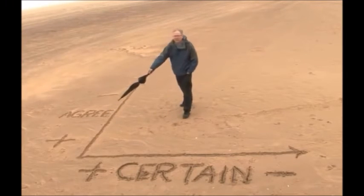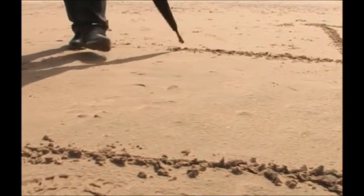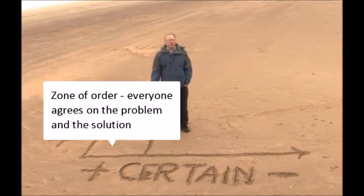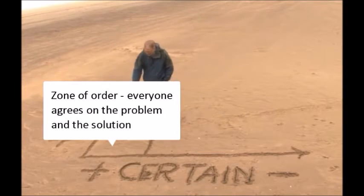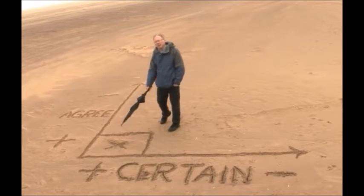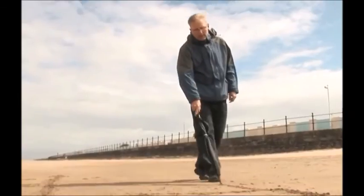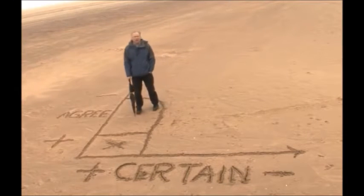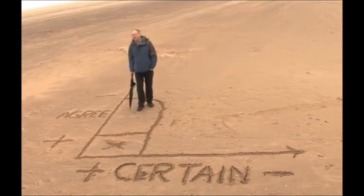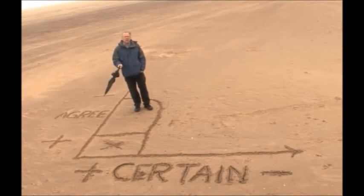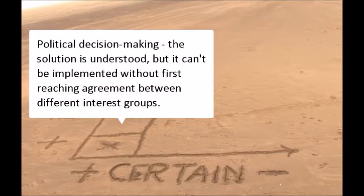Just using these two simple axes, you wind up with a zone — let's call it the zone of order or evidence-based policy making — where everybody agrees what the problem is and the experts know how to solve it. This is the home of traditional policy making, where targets and audits work. If experts know what the problem is and how to solve it but different actors want different things, we move into areas of political decision making, where different groups must be brought together to discuss it, bargains must be made, and agreements reached between groups.